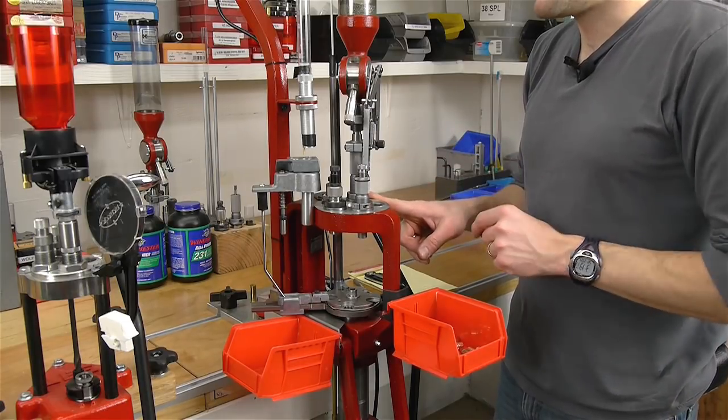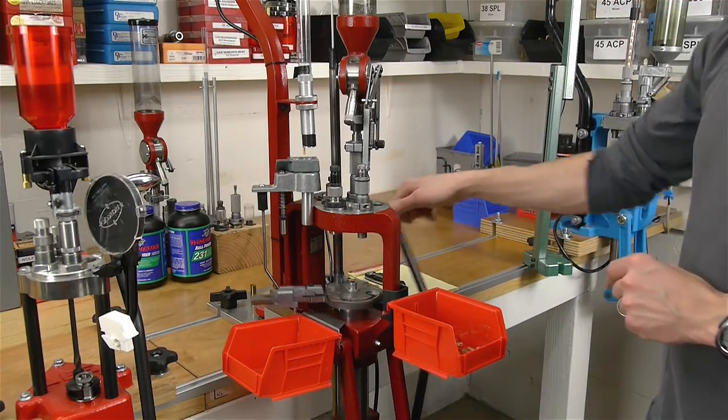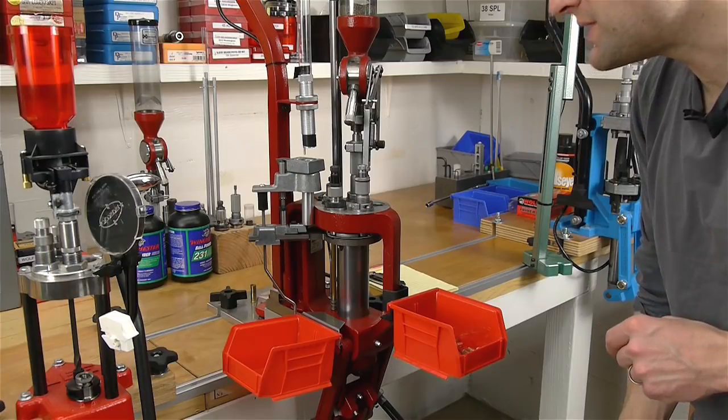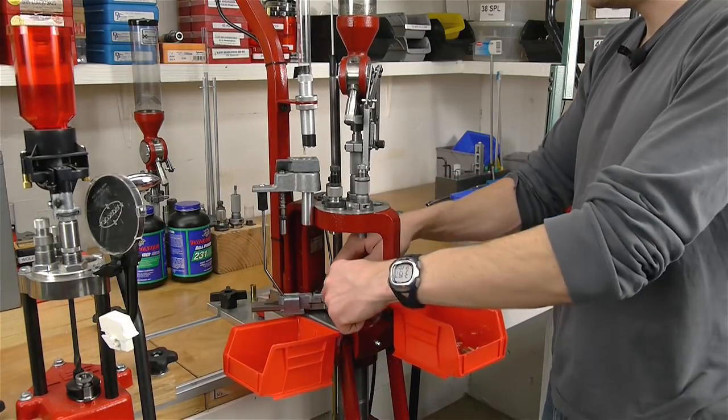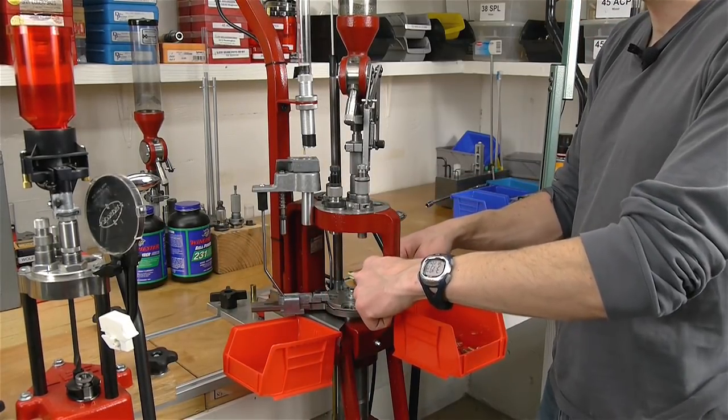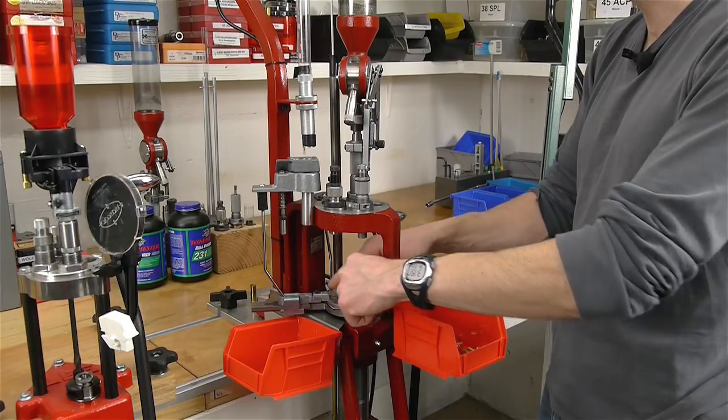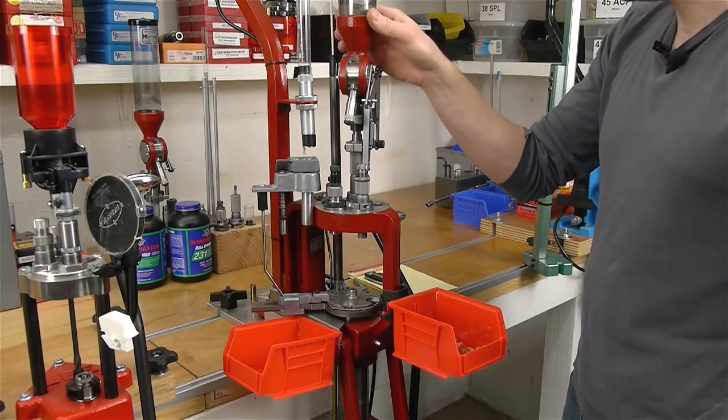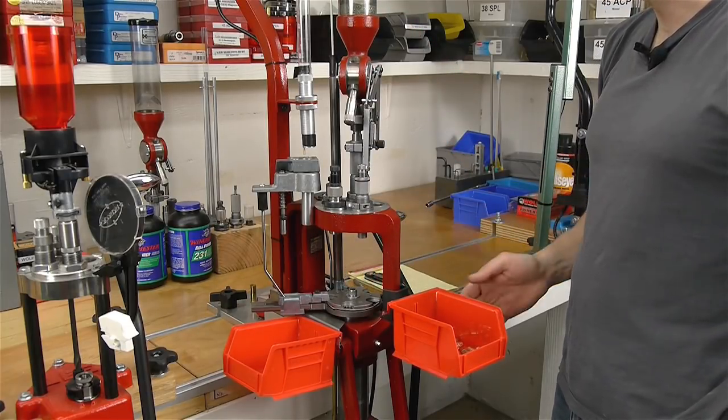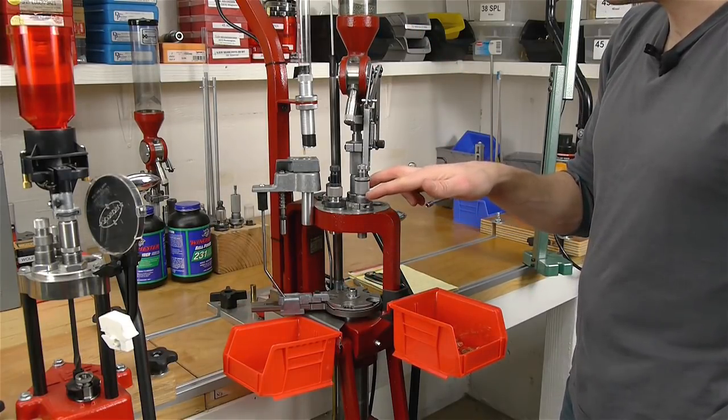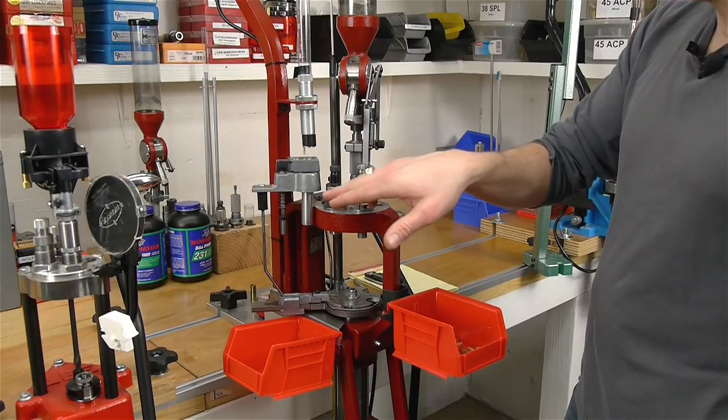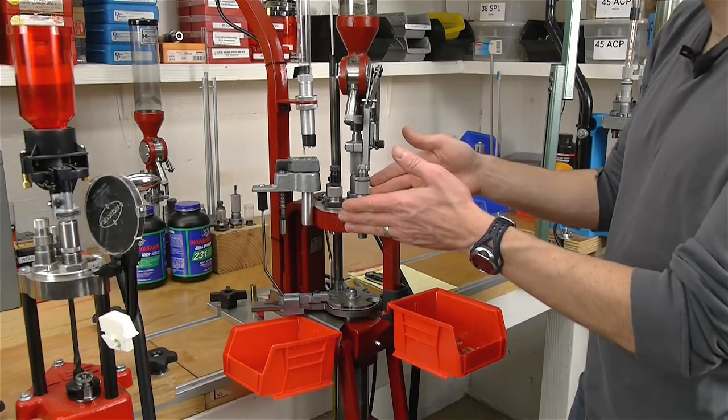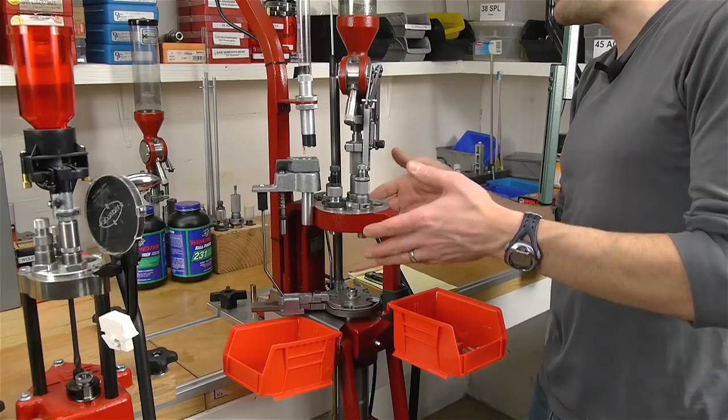Each time we pull the handle on this particular press we've got up to five cartridges that are being operated on at a single time. So in this particular case we're sizing and depriming, then we're charging on the top and priming on the bottom, we could have a powder check, we have a seating station, and then we have a crimping station for pistol ammo like we're loading here. This is set up for 44 Magnum right now.